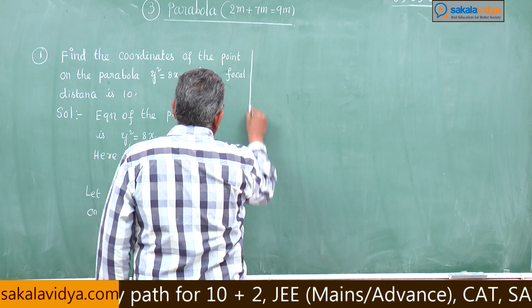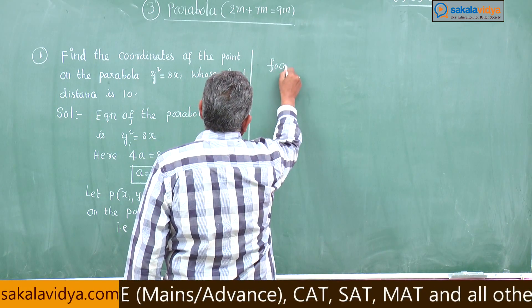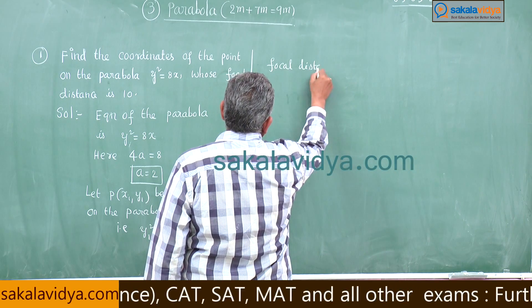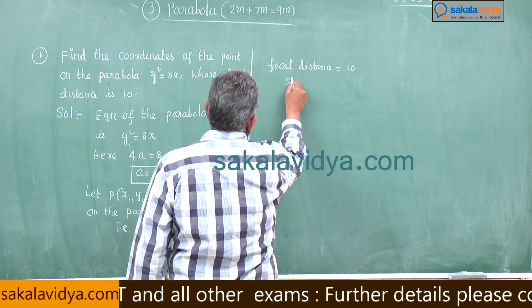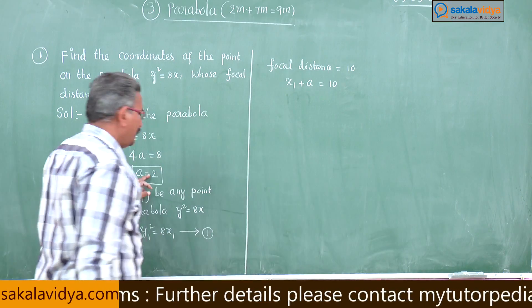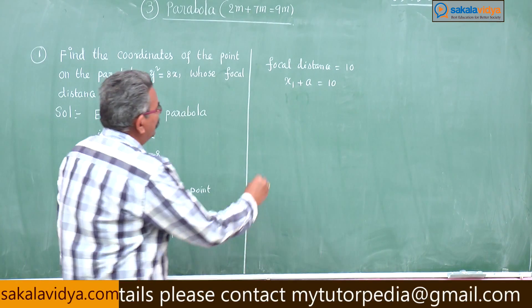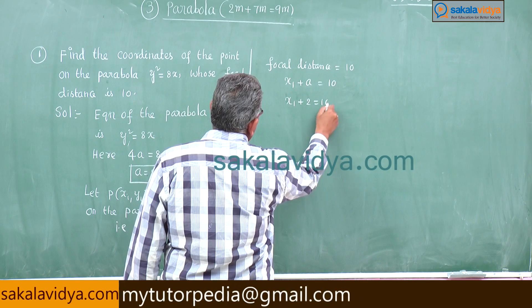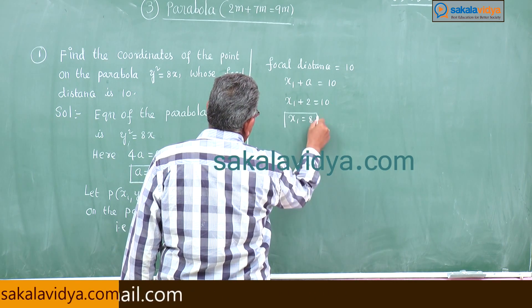Focal distance is given as 10. Using the focal distance formula: x₁ + a = 10. Since a = 2, we get x₁ + 2 = 10, therefore x₁ = 8.